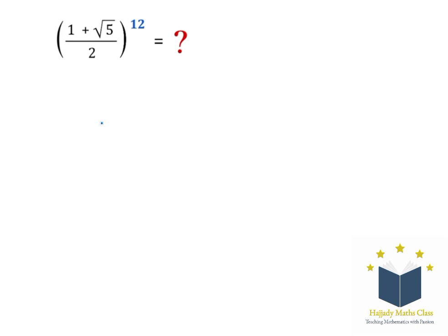The first thing we need to do is let y equal what we have in the expression, which is (1 + √5) / 2. So this y is going to take the place of our expression. Cross multiplying, we can say that we have 2y equal to 1 + √5.